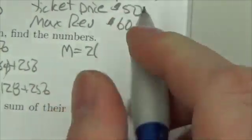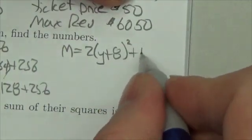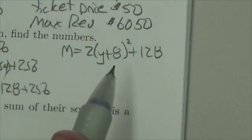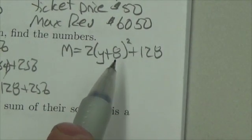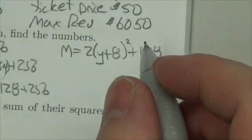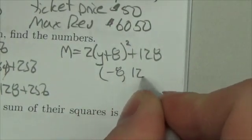M is now equal to 2 times, that'll be y plus 8 squared plus 128. So my vertex here is going to consist of a y coordinate and an m coordinate. So in this case here, the vertex will be negative 8 comma 128.